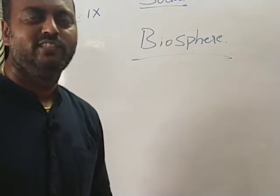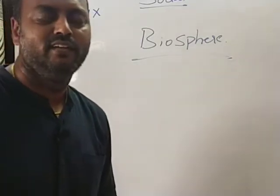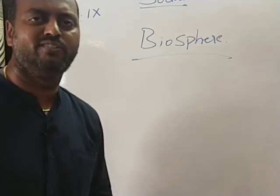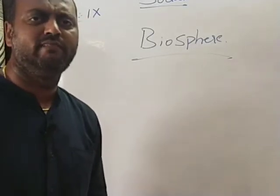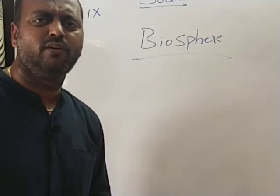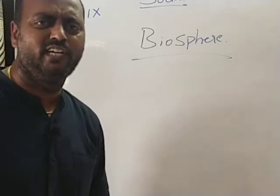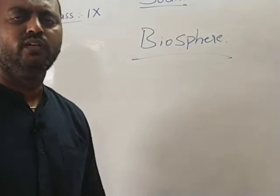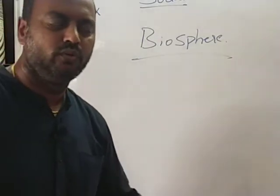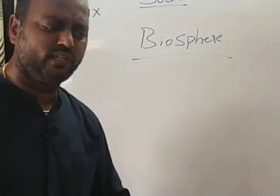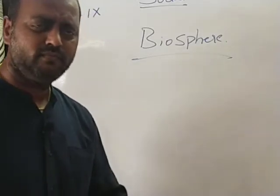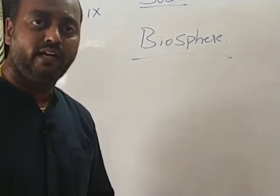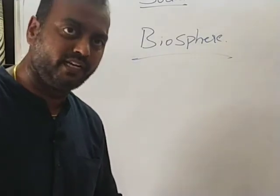Good morning, children. Yesterday we tried to understand about the natural vegetation under the biosphere. Depending upon the rainfall and sunshine, we divided the natural vegetation into six types. Yesterday we covered four of them: tropical evergreen, tropical deciduous, temperate evergreen, and temperate deciduous.